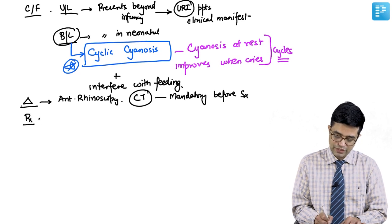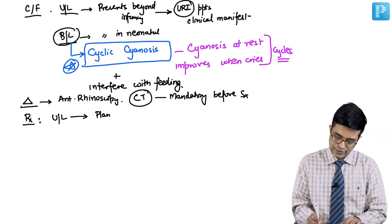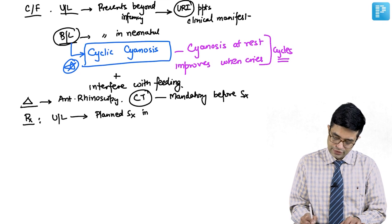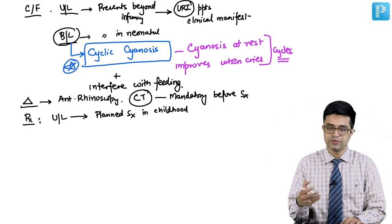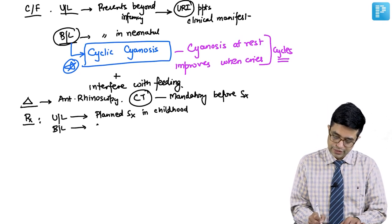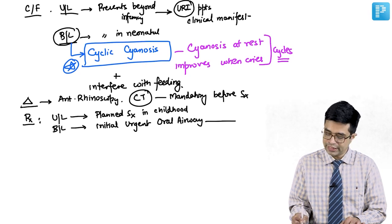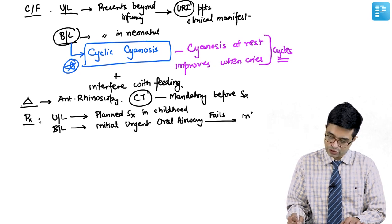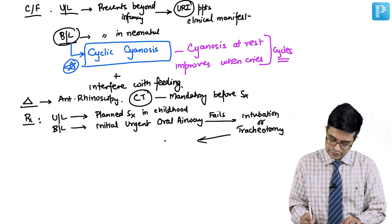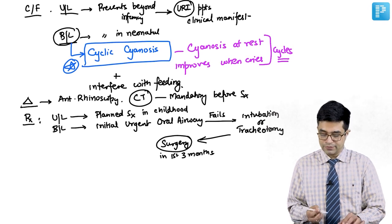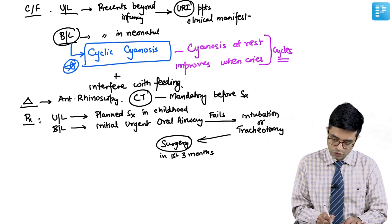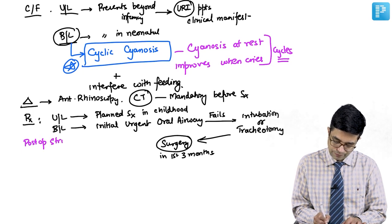Treatment: unilateral choanal atresia usually requires a planned surgery in childhood and need not be performed urgently in infancy. Bilateral choanal atresia requires initial urgent oral airway placement; if that fails, these children often require intubation or tracheotomy. Surgery is then performed in the neonatal period, usually within the first three months of life. A major problem with surgical repair is postoperative strictures or restenosis, which is why surgery is delayed as long as possible.